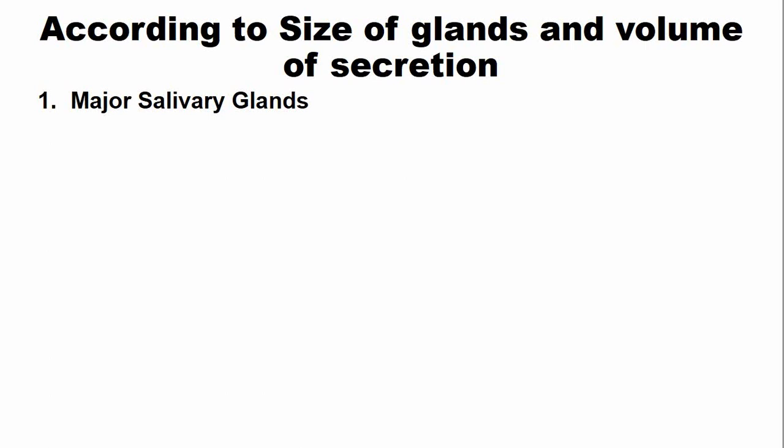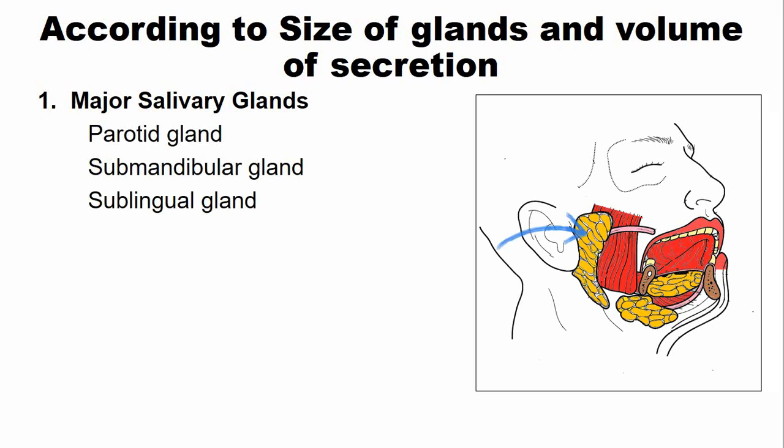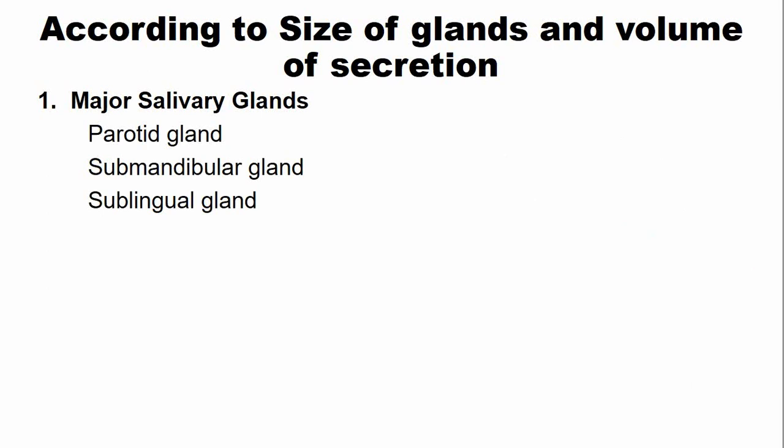The salivary glands are classified into major salivary glands. The major glands include the parotid glands, submandibular, and sublingual. These glands are paired and their secretion is nerve mediated, meaning they are under the control of the nerves — especially the parotid and the submandibular glands.